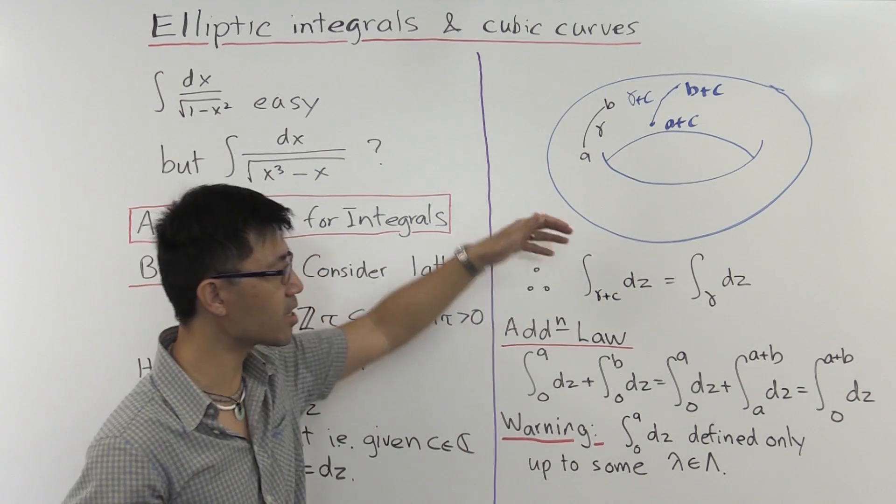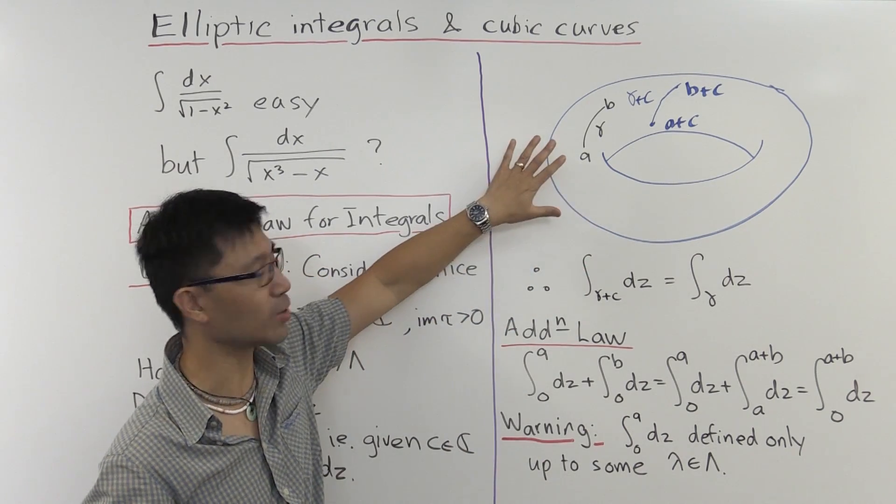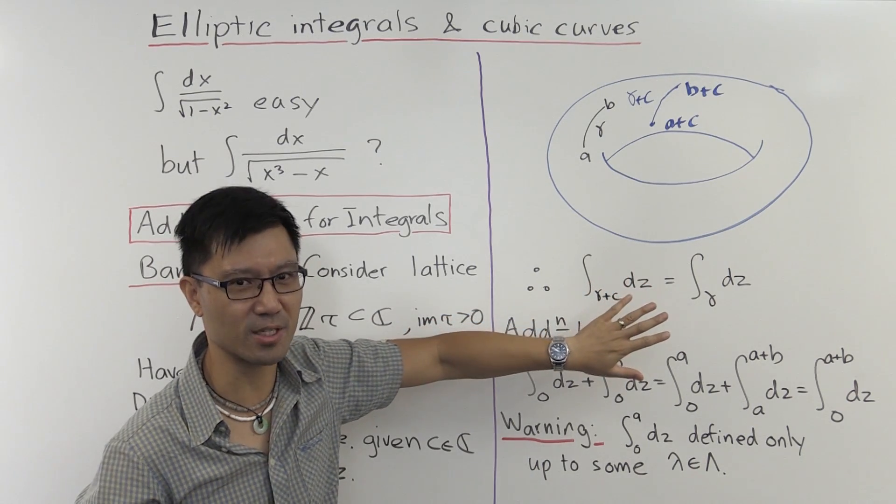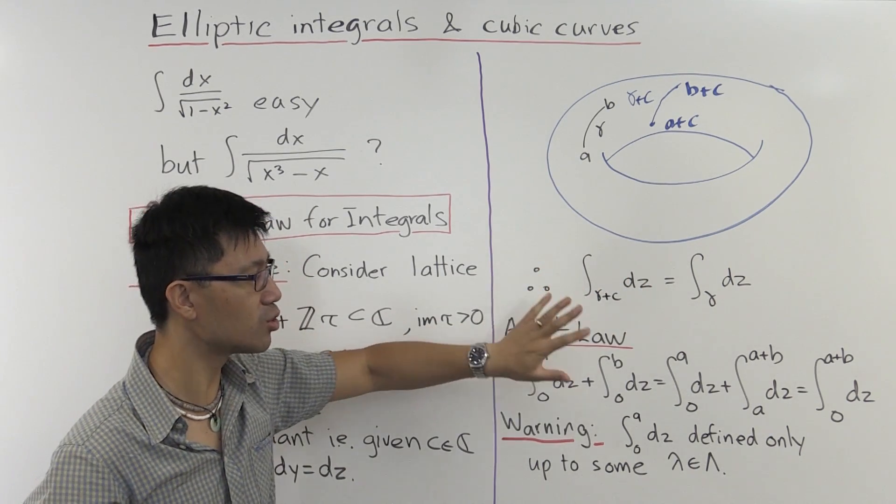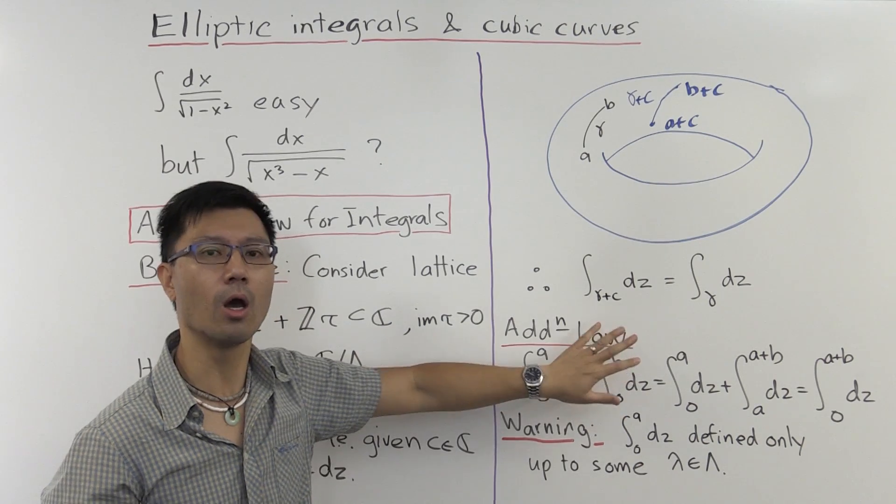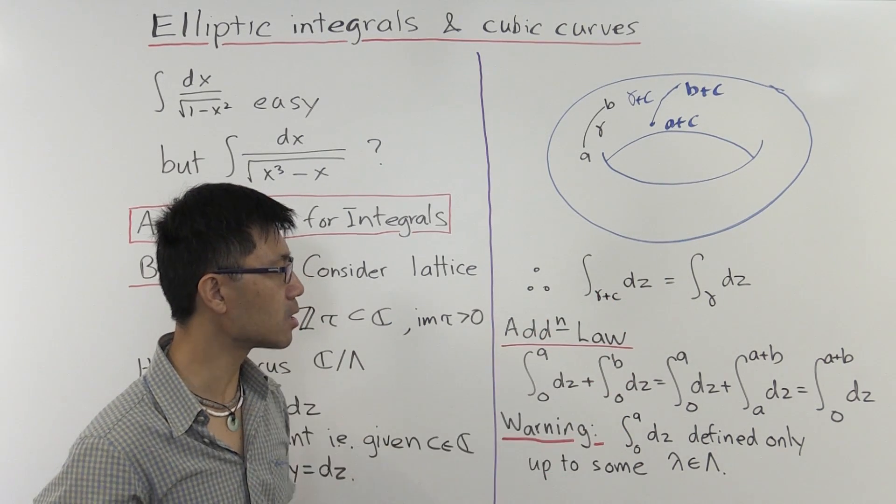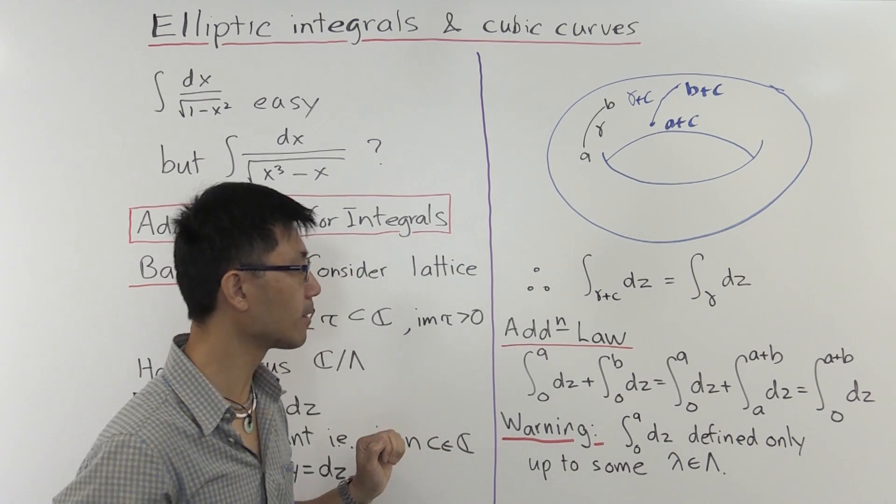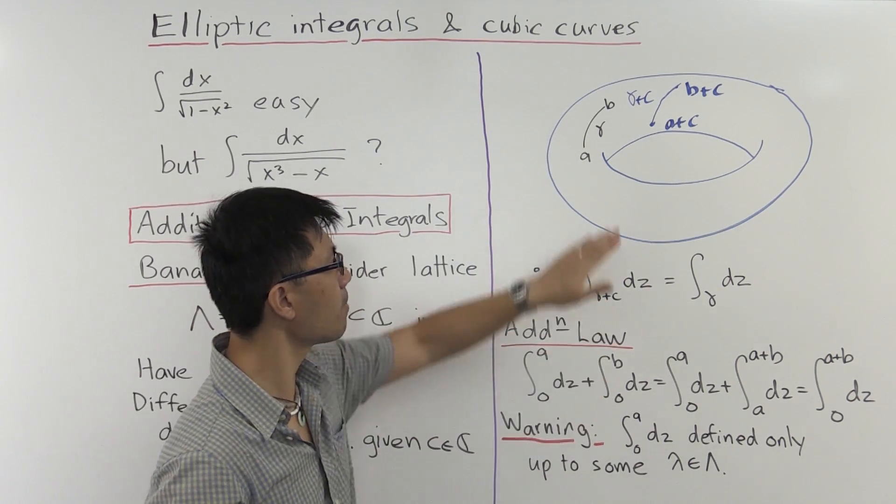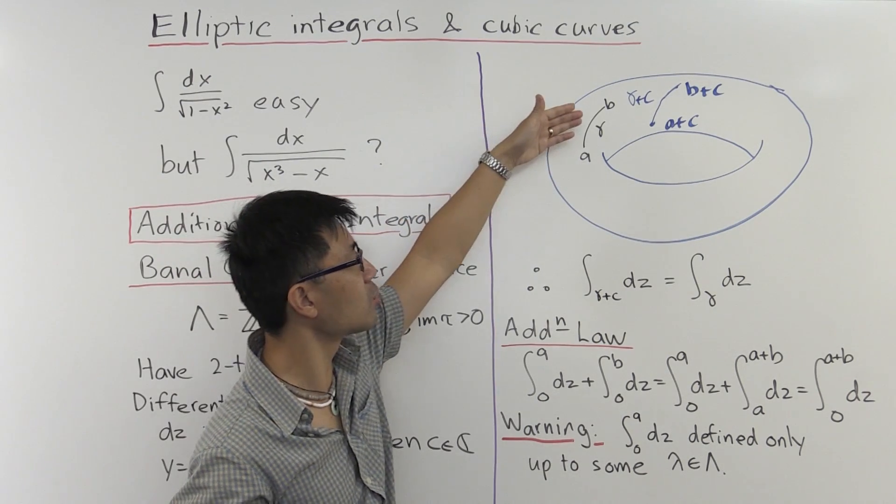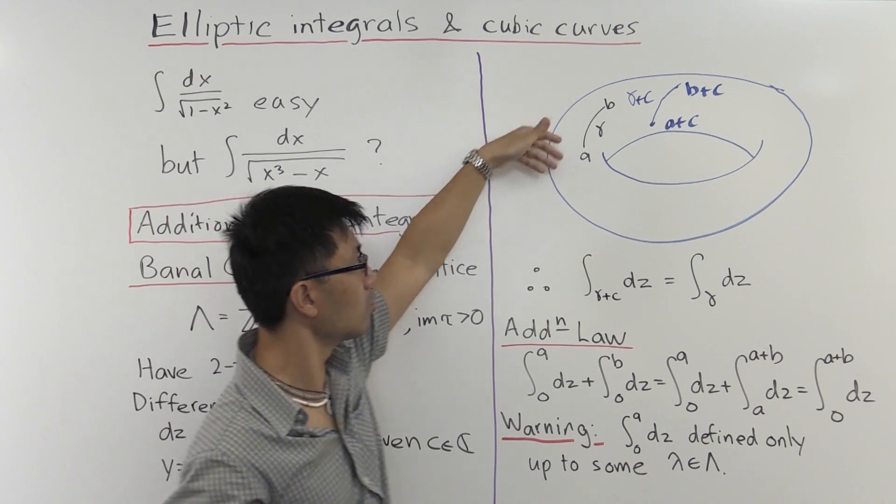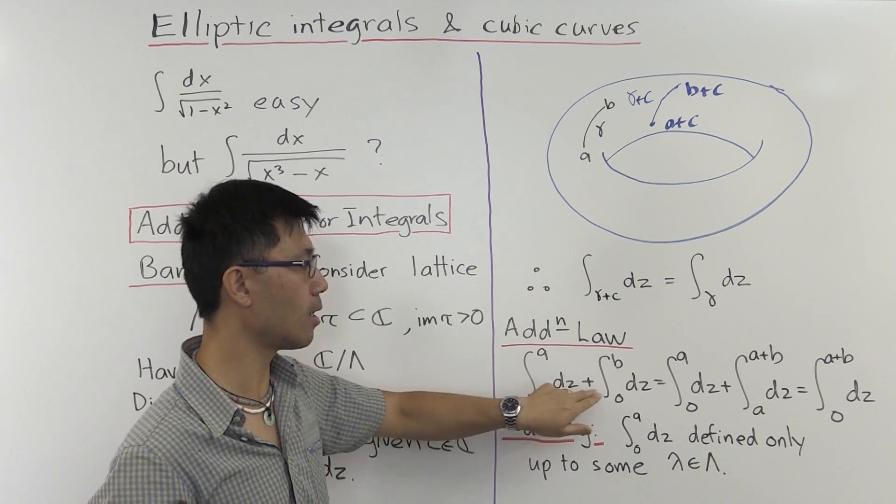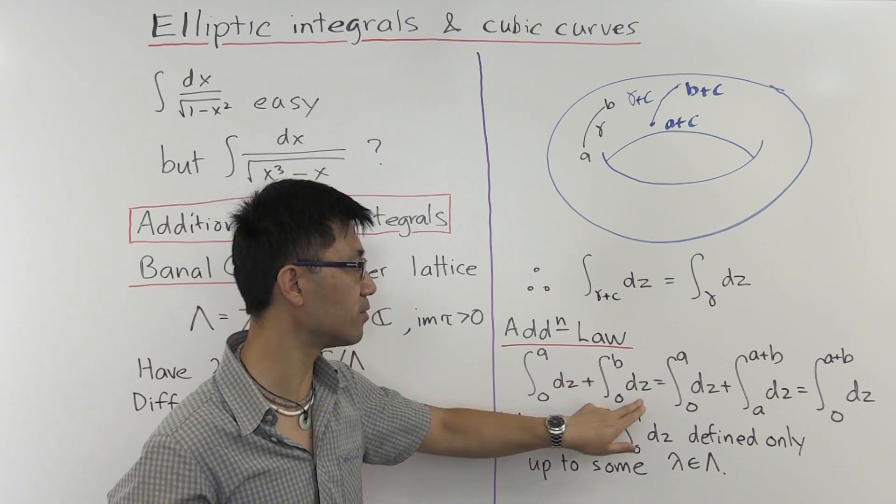Okay, so let's look at the addition law in this special case here. And in this case, it really doesn't tell us anything interesting. But it will show you the general principles at work when you want to try to integrate on some complex manifold with some extra group structure. Okay, so let's, rather than writing these integrals with a path, let's just use the endpoints. So you have the integral from 0 to a of dz plus the integral from 0 to b of dz.